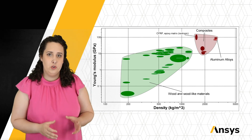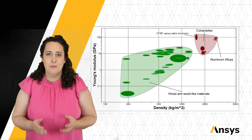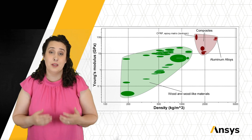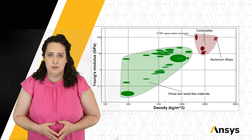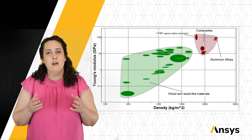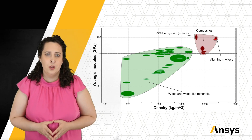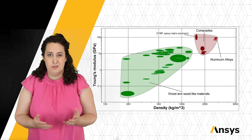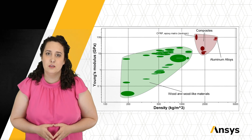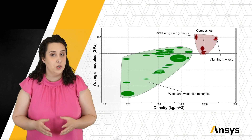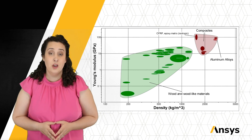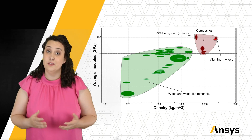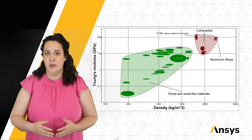Why have we made these material choices over the years? We can look at an Ashby chart again, once again plotting Young's modulus versus density, this time comparing wood and wood-like materials to composites and aluminum alloys. We can see that wood is quite lightweight, but has a significantly lower Young's modulus than both composites and aluminum alloys. If we're focusing on just composites and aluminum, why move more towards composites and away from aluminum? They have roughly the same Young's modulus. Well, the composites — particularly carbon fiber composites — are much lighter. That density is important. The pole needs to be lightweight if I'm going to carry it while running towards the bar.